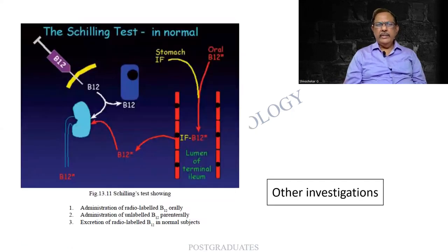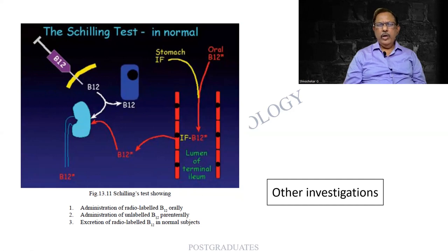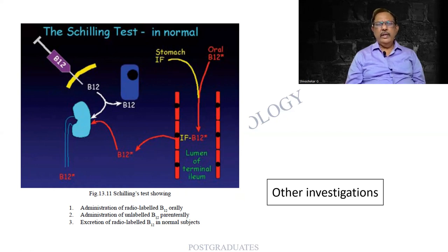There will always be other investigations. I am finding the Schilling's test here — it can be asked as an independent question or as part of a general answer. Make a list of other investigations: peripheral smear, hemogram, bone marrow, and other investigations where you find serum B12 levels etc. You will have to mention and describe the Schilling's test. It is your duty to read it from your text.